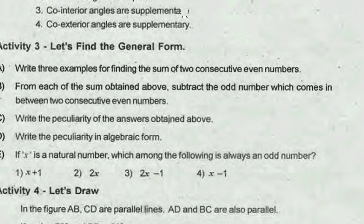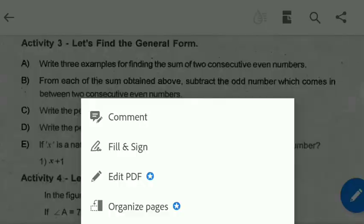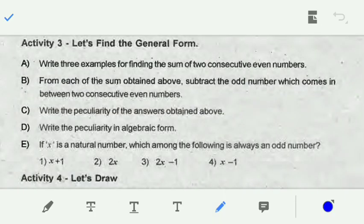If x is a natural number, which among the following is always an odd number?